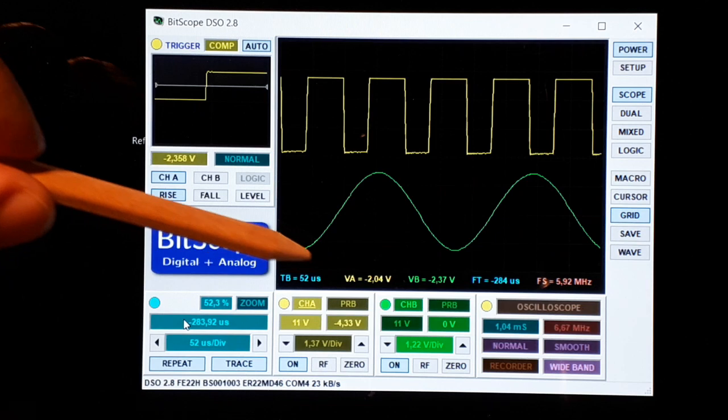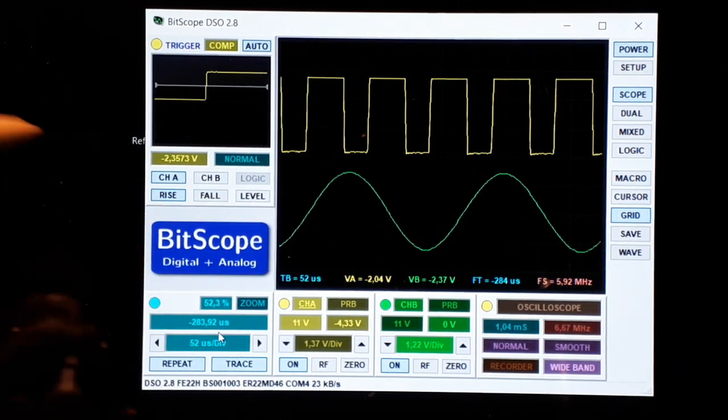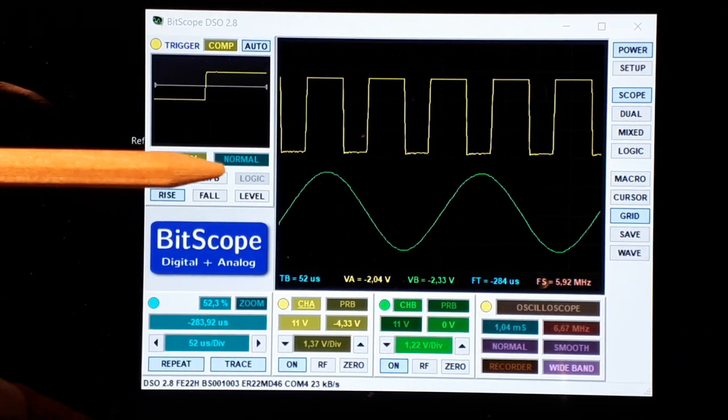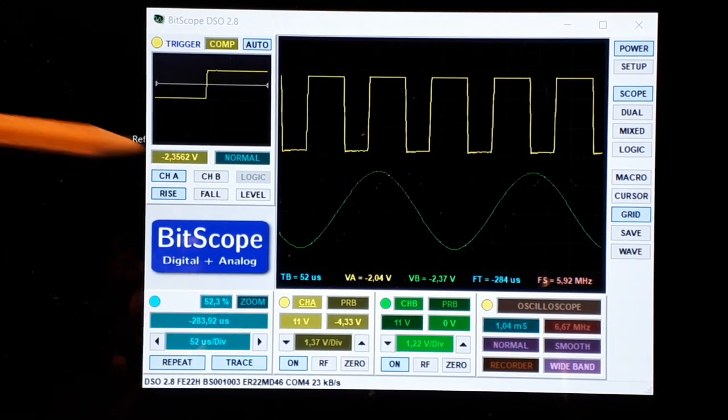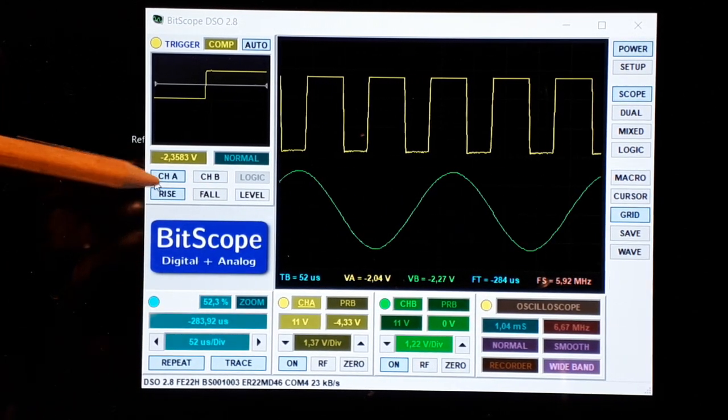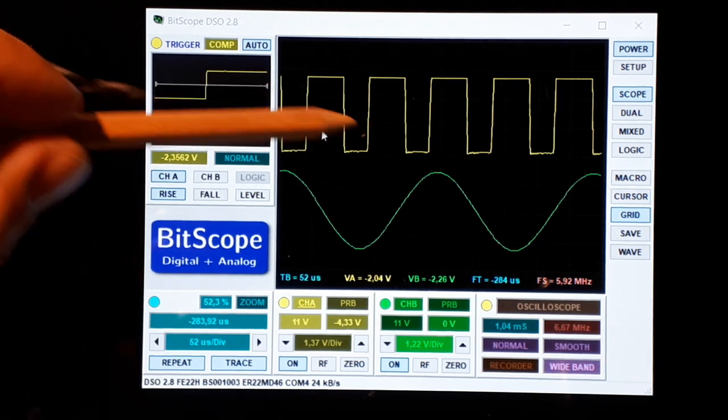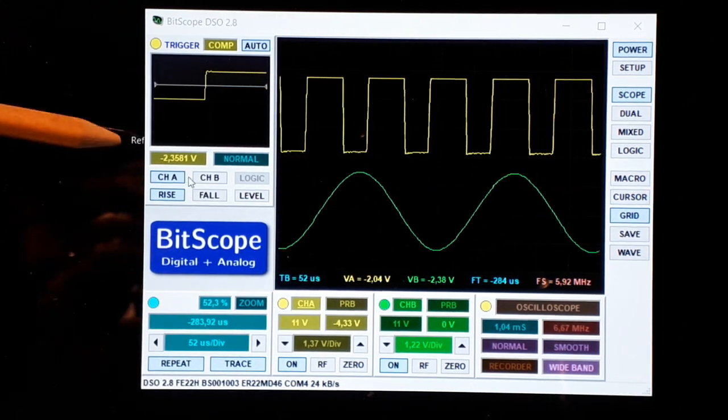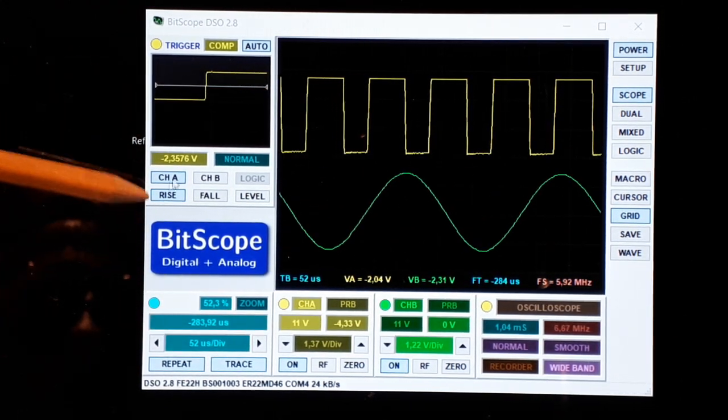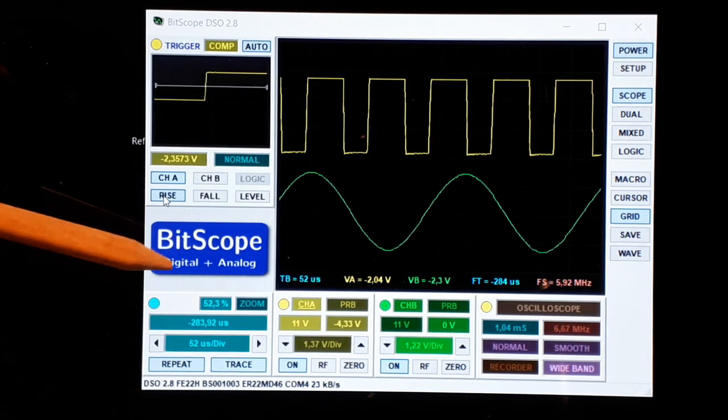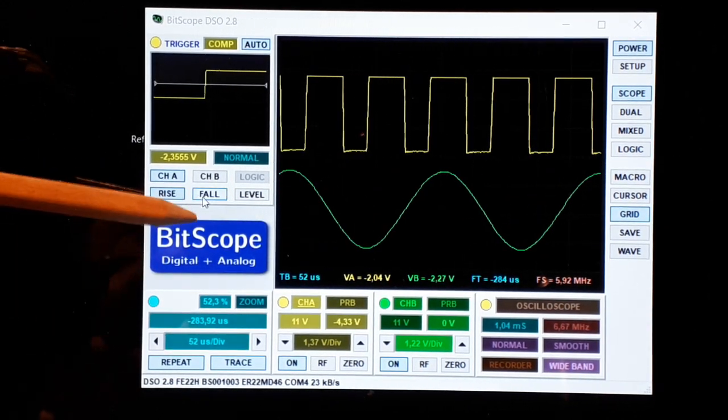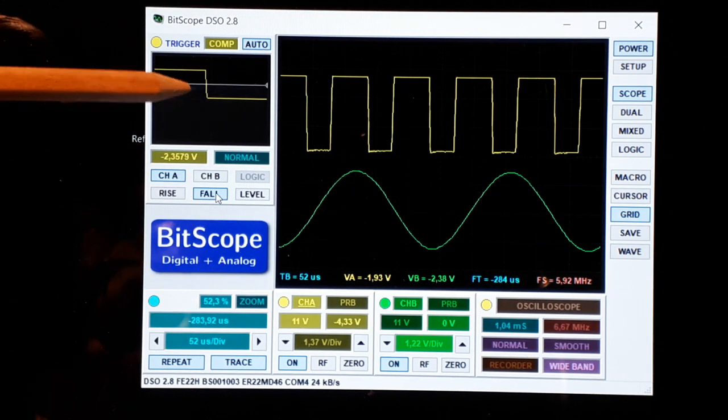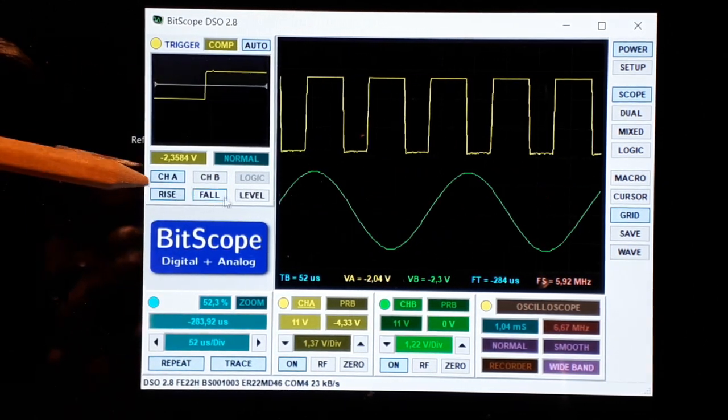Then about the trigger control panel, what we have is that here is the source, channel A or channel B. Now we have channel A which is this one. And you could say like I want to use the edge, the rising edge or the falling edge. This is a trigger point.